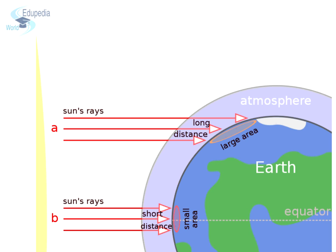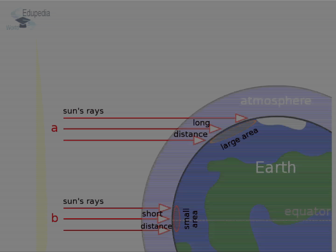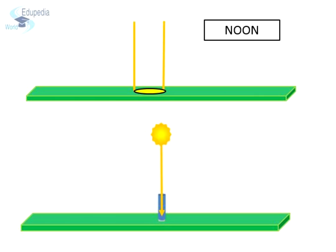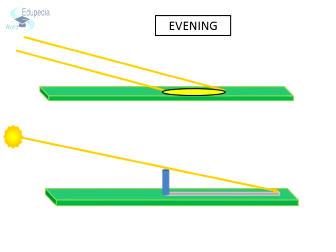One can easily notice the change in intensity of light during the course of a day. During morning, as the sun is near the horizon, the sun rays are very slanting and thus the heat received is less. As the sun goes higher in the sky, the angle formed by the sun rays keeps on decreasing until it reaches its highest point, the zenith. We experience maximum heat given by the sun rays during noon as they are direct. Again, as we approach evening, the sun rays start becoming slanting and therefore we start getting less intense heat.